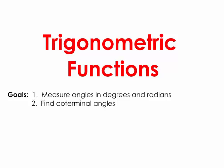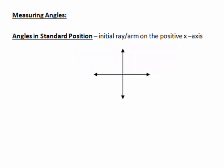Let's begin our look at trigonometric functions. What we're going to do today is look at the measure of angles in both degrees and radians, and finding coterminal angles. The first thing we have to remember is how to measure an angle. When we're measuring an angle, we always measure in standard position, and standard position is the measure from the x-axis, which we call the initial ray.